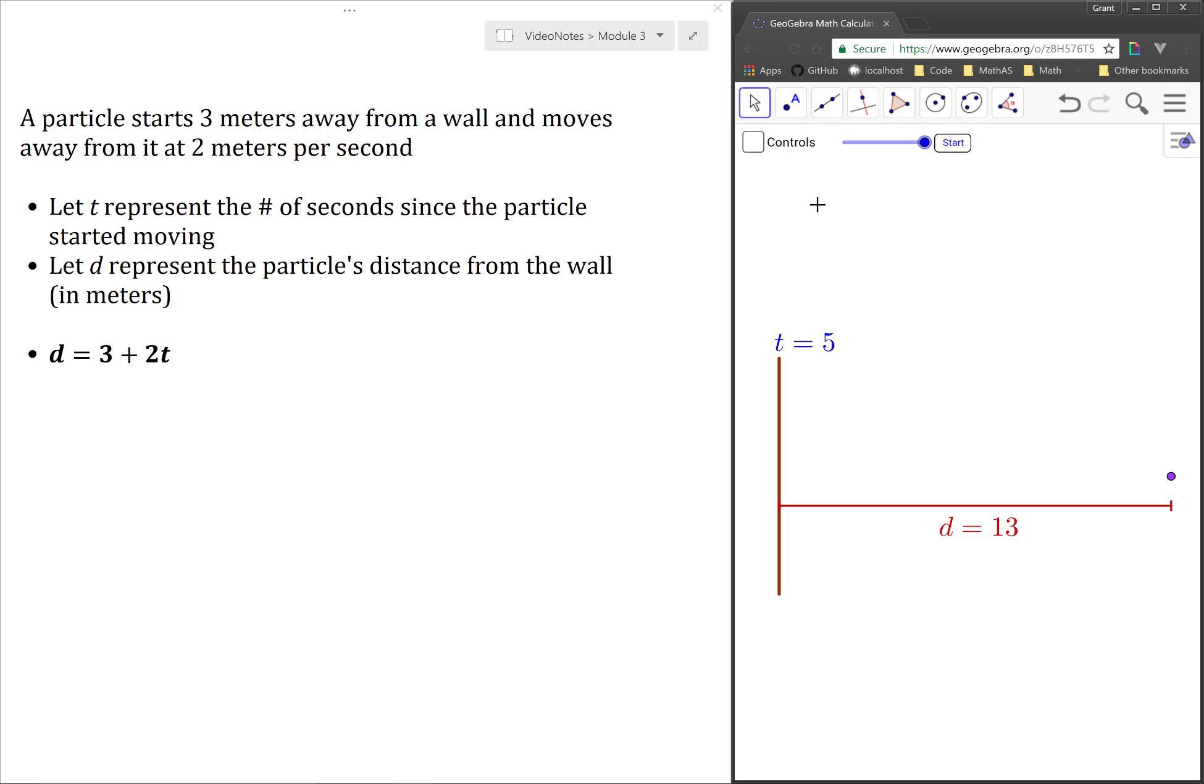Now we can actually visualize a lot of aspects in this situation, so let's use segments to represent our thinking. First, the particle is 3 meters away from the wall when it begins moving, so we can use a little segment here to represent the particle's initial distance from the wall.